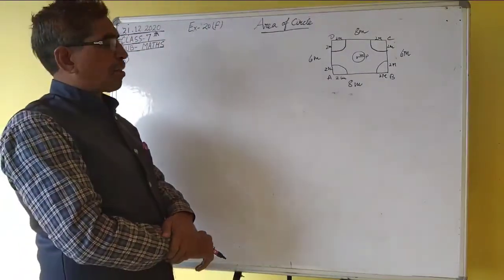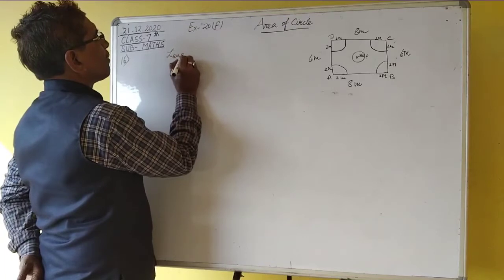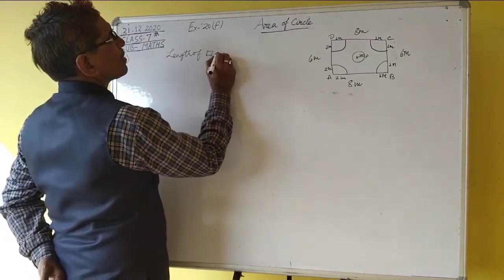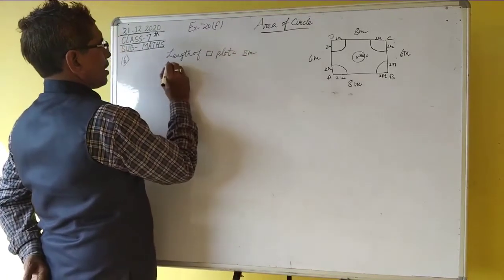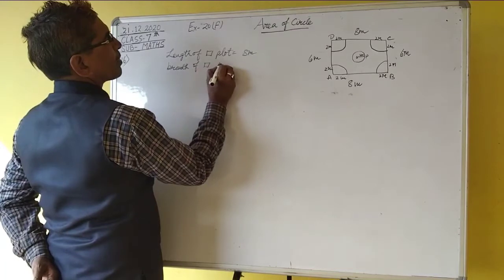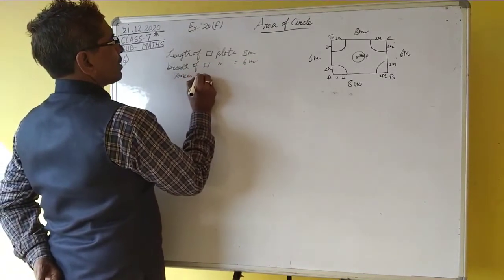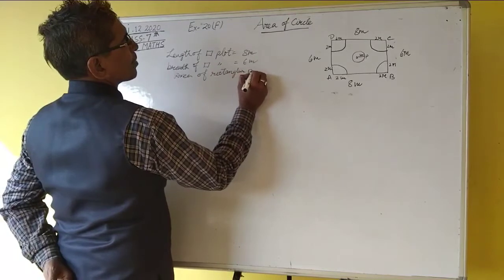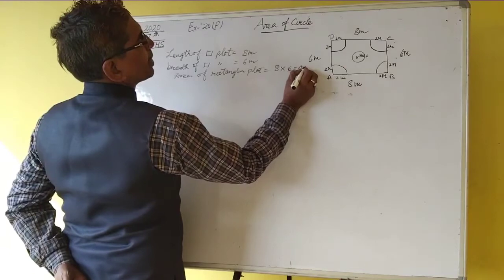First, length of the rectangular plot is 8 meters, breadth of the rectangular plot is 6 meters. Area of the rectangular plot equals 8 into 6, which is equal to 48 meter square.